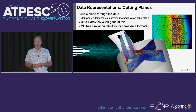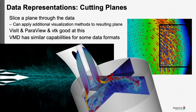I'll spend the most time on data representations — what do you do with data once you've computed it and want to understand what's in it? One of the most basic representations is cutting planes: you slice a plane through a dataset that has some mesh, and then apply additional methods on the resulting plane — typically coloring by some scalar field within the dataset. VisIt, ParaView, and VTK are all good at this; VMD also has similar capabilities for some data formats.